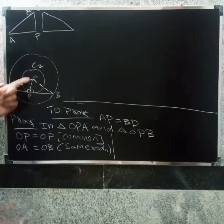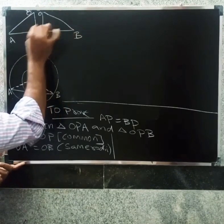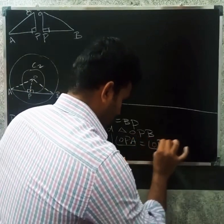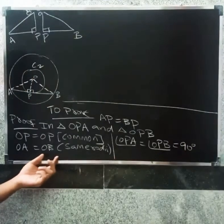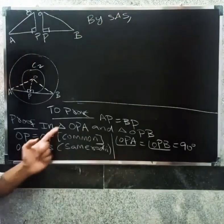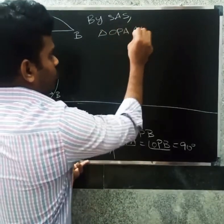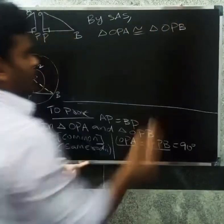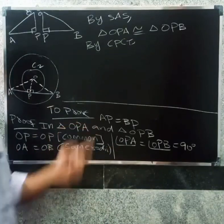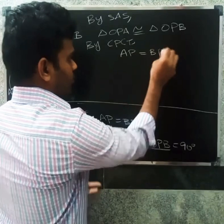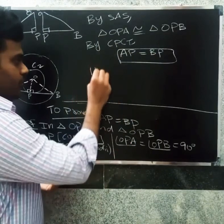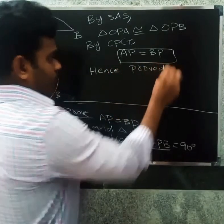The angle at P is a right angle, equal to 90 degrees. Triangle OPA is congruent to triangle OPB by the RHS criterion. Therefore AP equals BP. Hence proved — the chord AB is bisected at the point of contact P. Thank you.